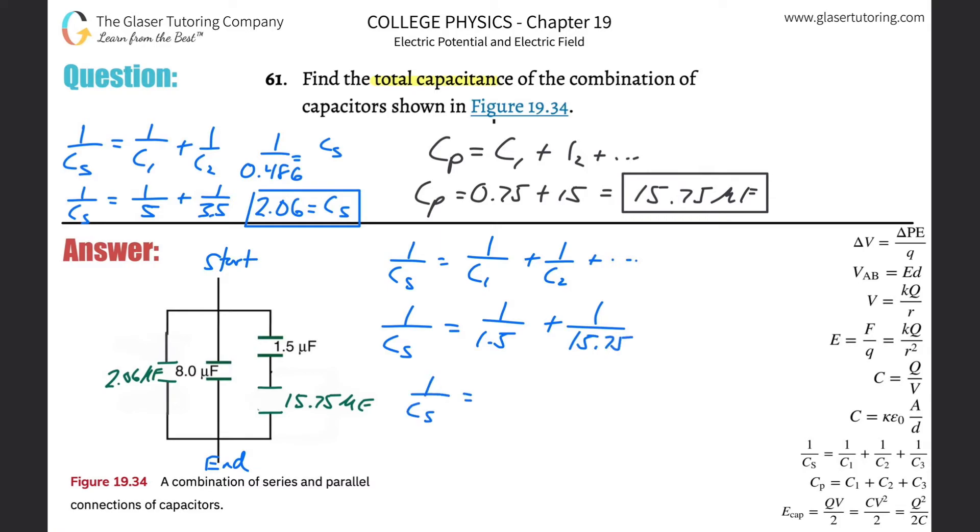Let's do the math: one divided by 1.5 plus one divided by 15.75, and I get a value of about 0.730. We've got to solve for that Cs—bring it out. Simply take the reciprocals: one divided by 0.73, which works out to be about 1.37 microfarads. That equals the series arrangement there.